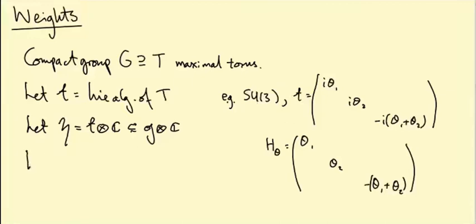So let H subscript R be i times little t. This subscript R is because now the entries of H_theta are going to be real numbers, so this is a subset of little h.